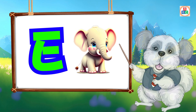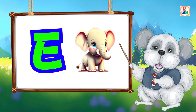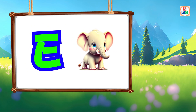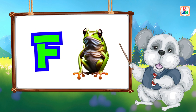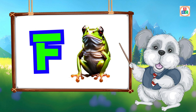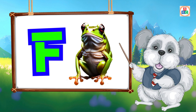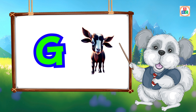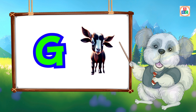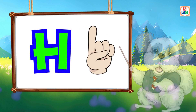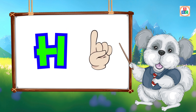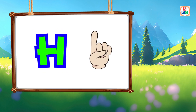E is for elephant, e-e-elephant. F is for frog, f-f-frog. G is for goat, g-g-goat. H is for hand, h-h-hand.